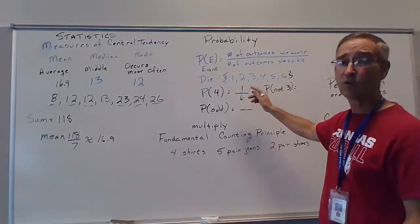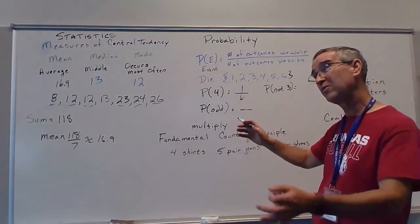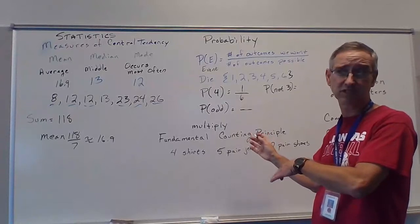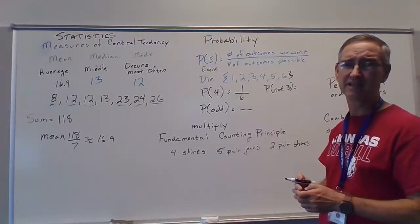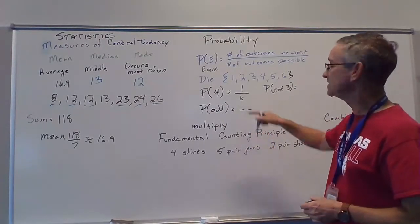One out of six. Now we can change that to a decimal, which is 0.18 something, something, something, something, something, something. I don't necessarily want to do that. So we'll just leave this as one sixth.